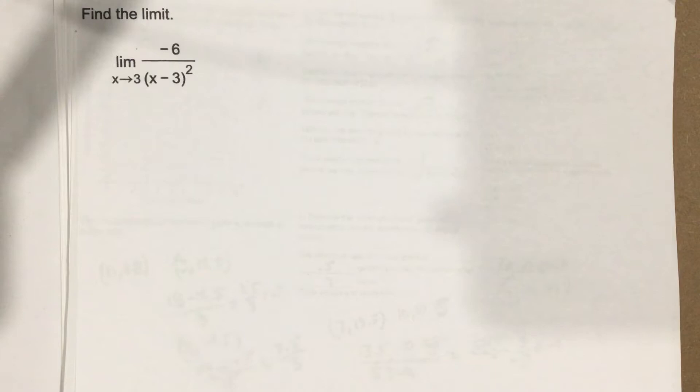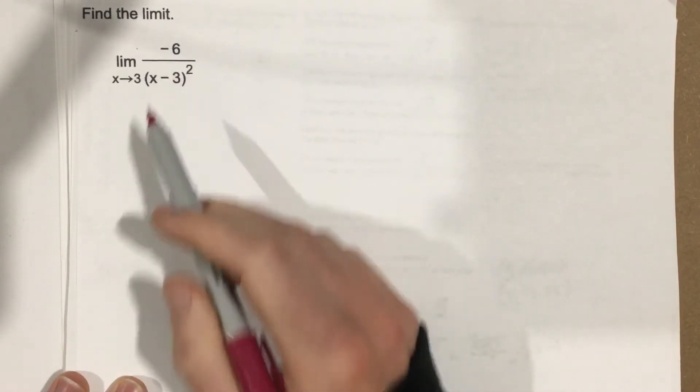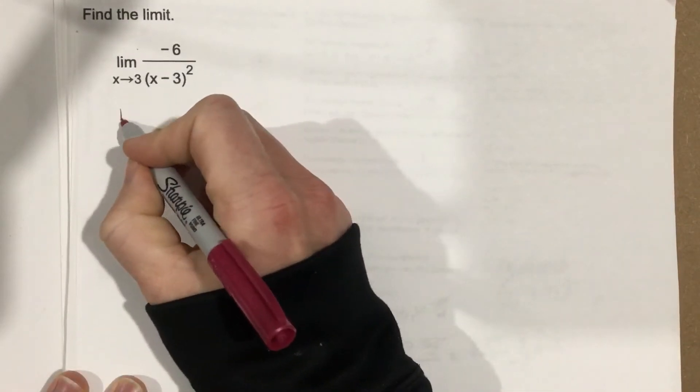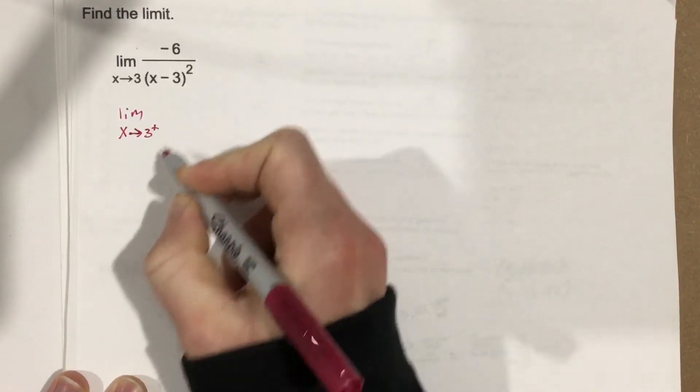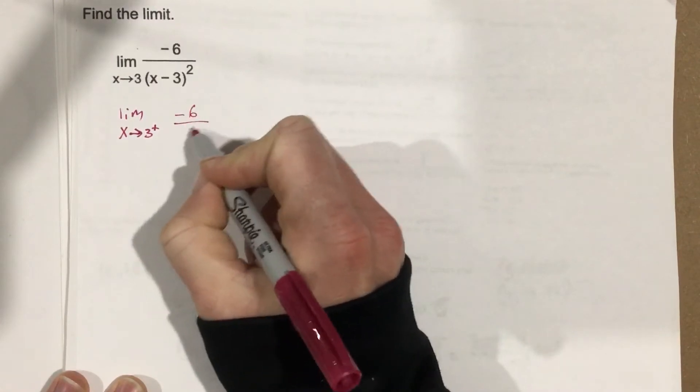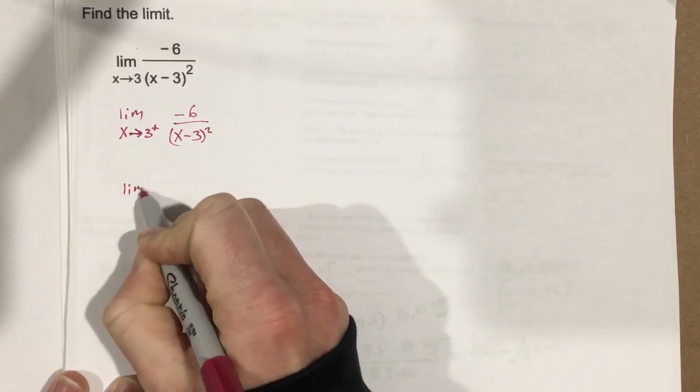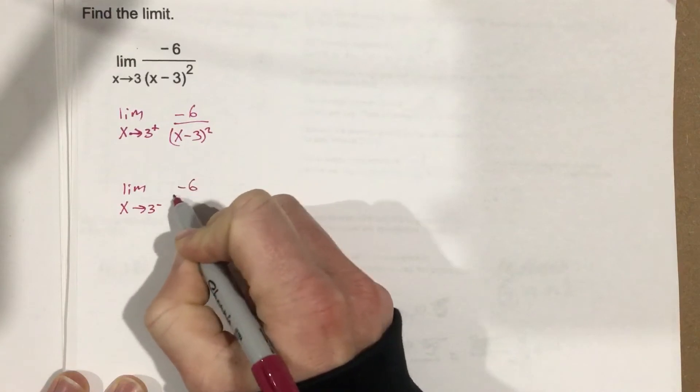We don't have an algebra manipulation to use for direct substitution here. So what we're going to do is test the limit as x approaches 3 from the right for this function, and then also test it from the left. We're going to do some calculated work to figure this out.